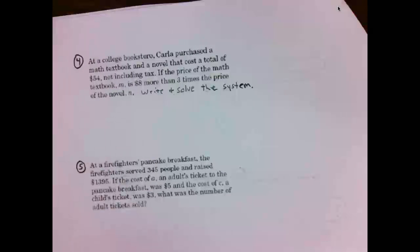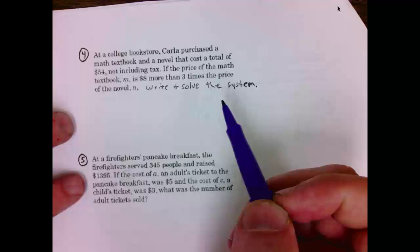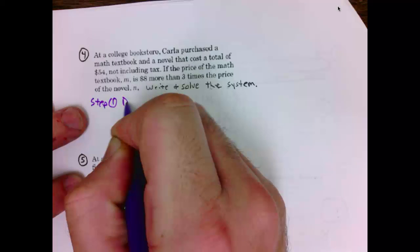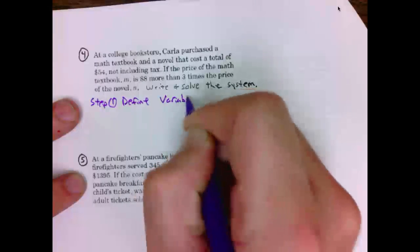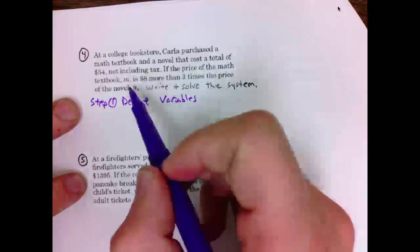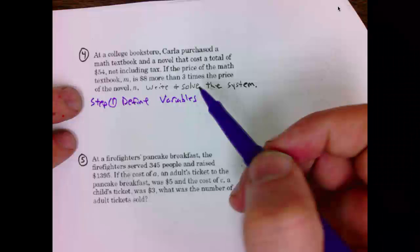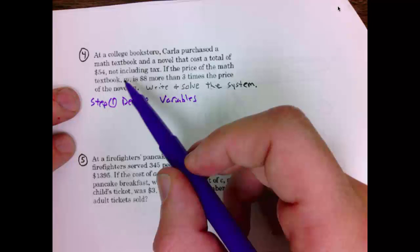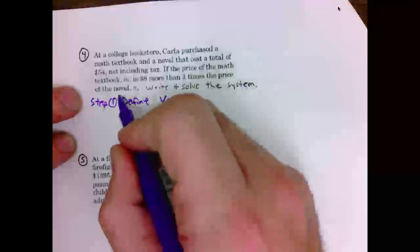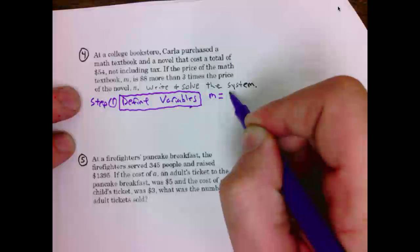Number 4, write and solve the system. So we're going to use our four step process. Step 1, define variables. It says at a college bookstore, Carla purchased math textbook and a novel. If the price of the math textbook m is 8 more than 3 times the price of the novel, n, write and solve the system. So we're talking about math, textbook, and novel. We want to know what those prices are. So when I define my variables, step 1, define the variables.